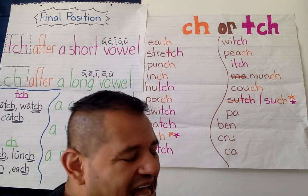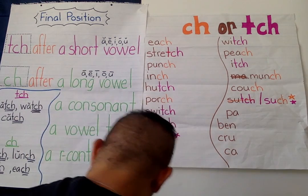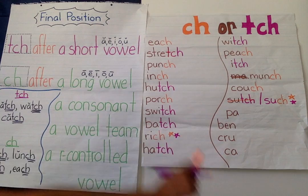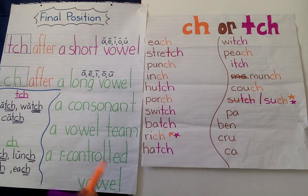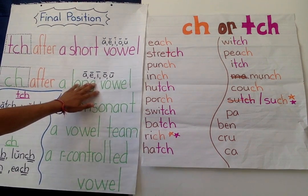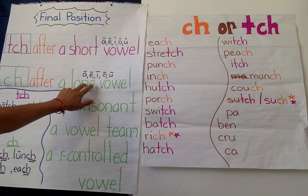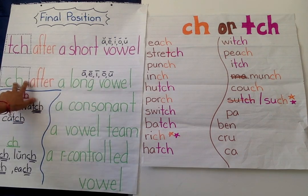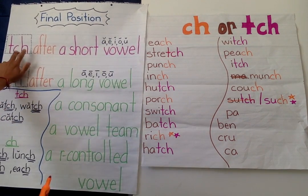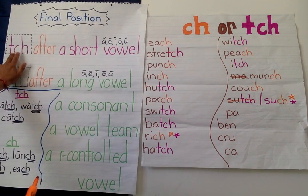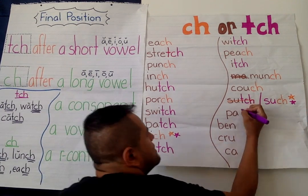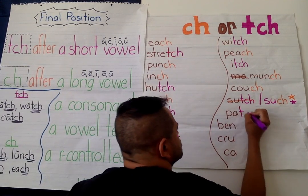P-A — "patch." I see the A. Is it a vowel? Is it long? P-A — nope. A, apple, short. It's a short vowel, so I'm going to use P-A-T-C-H, "patch."